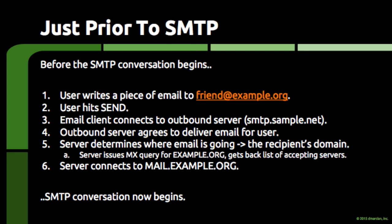The outbound server then does something interesting. It determines where the piece of email is going by looking at the recipient's email domain. Once the recipient's domain is known, the outbound email server asks the global domain name system — almost always referred to as the DNS — for a list of servers that accept email on behalf of the recipient's domain. When the list is returned, the outbound email server can then connect to the server that will accept the recipient domain's email, and when that connection is made, the SMTP conversation begins.